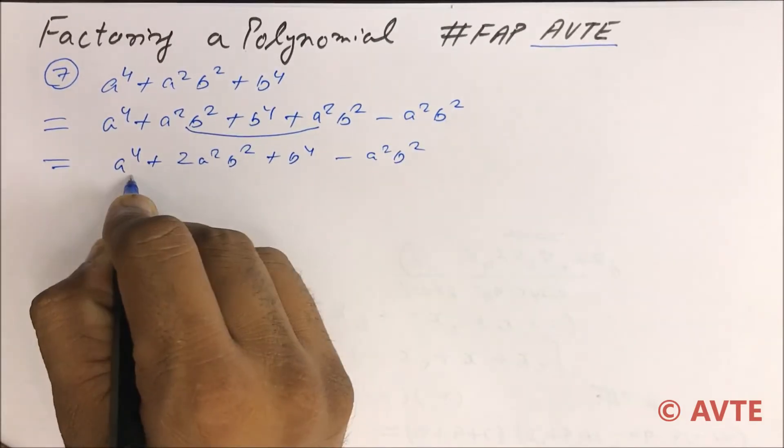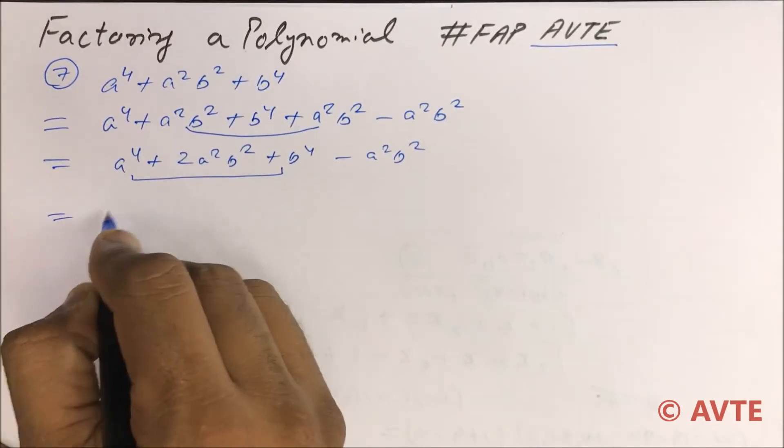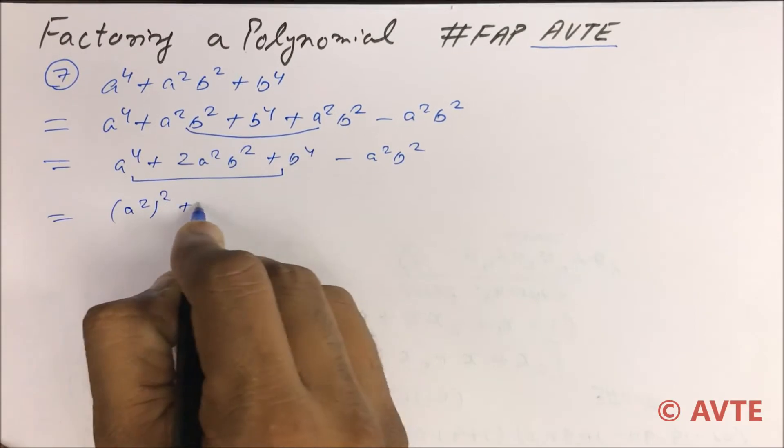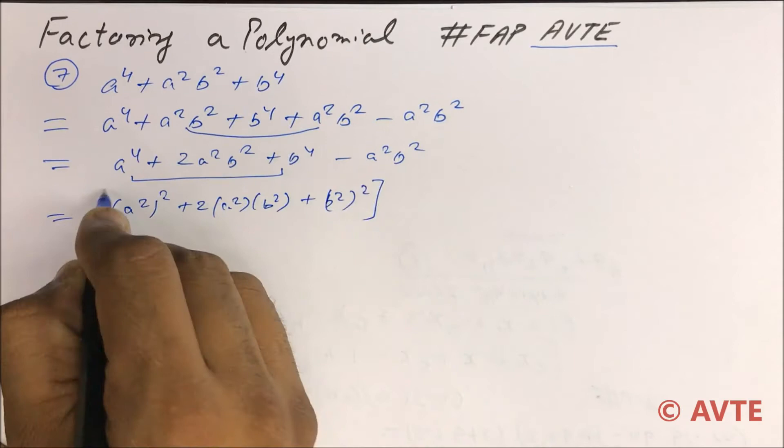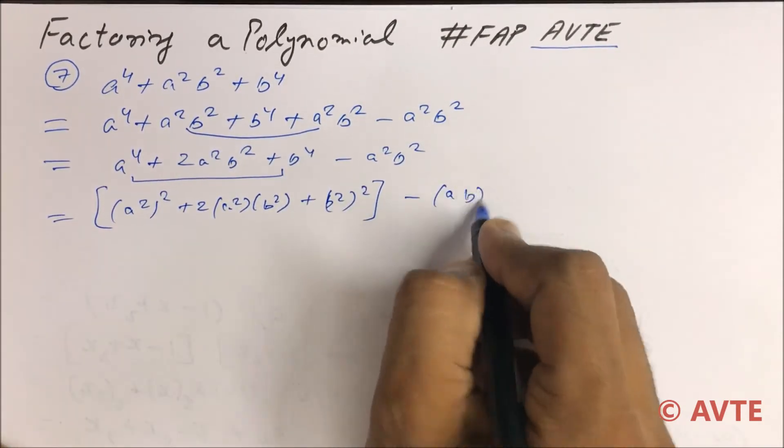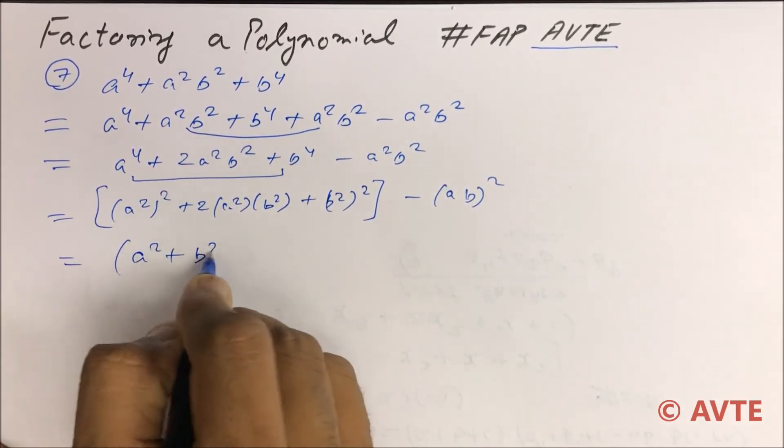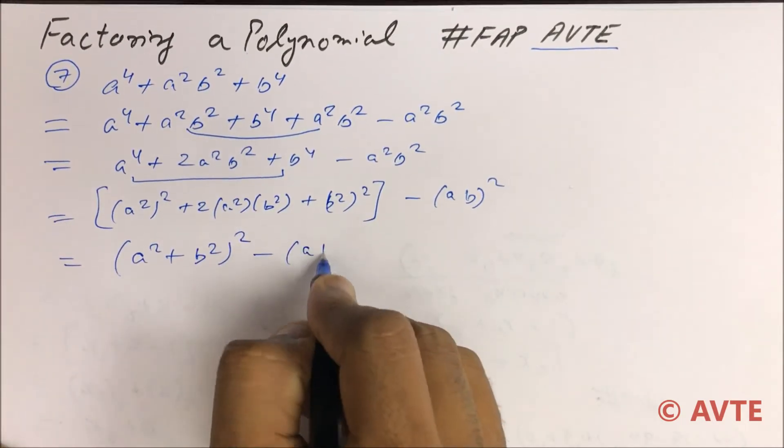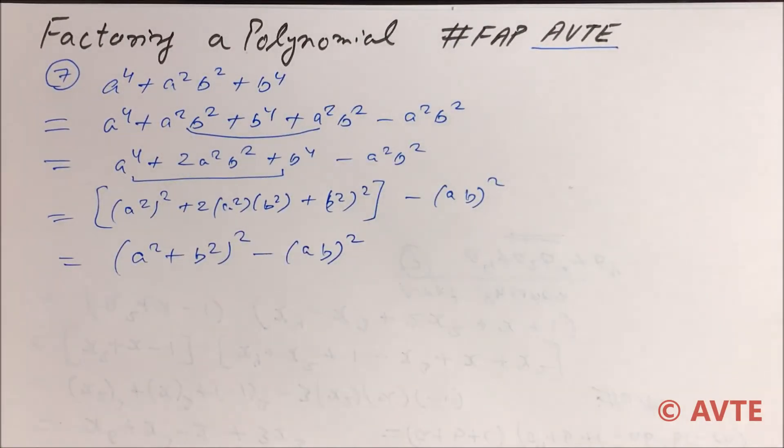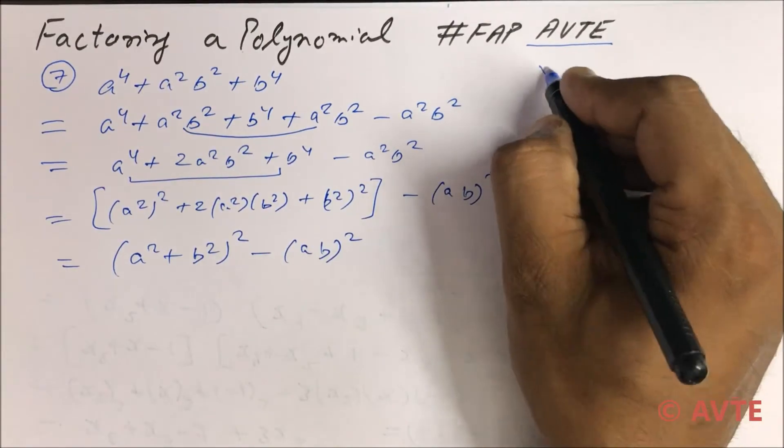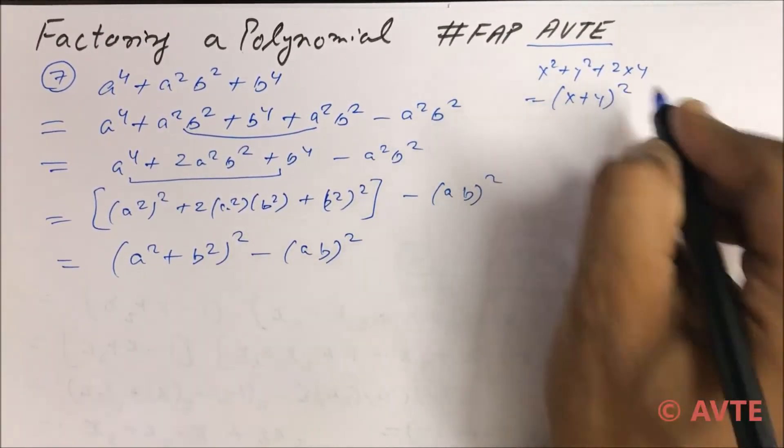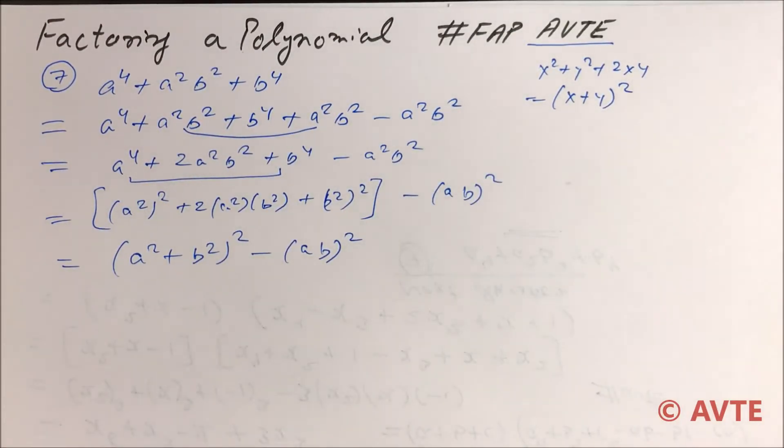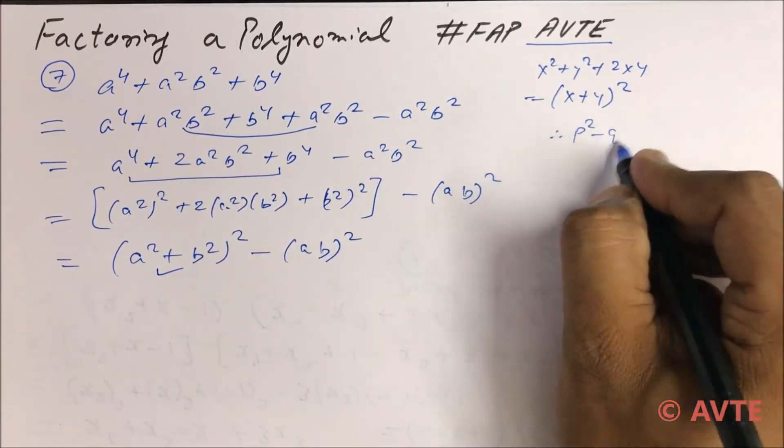And if you pack this, it becomes a square square plus 2a square b square plus b square square, minus ab square. This is a plus b whole square minus ab square. And I told you many times that if x square plus y square plus 2xy, you can pack in format x plus y whole square. Okay, so get this.